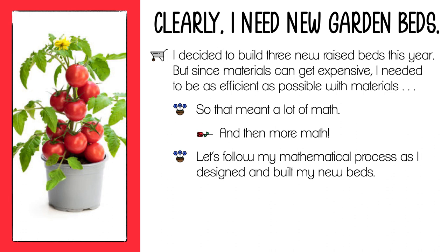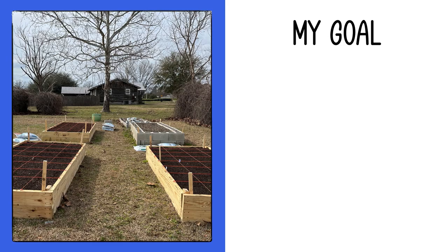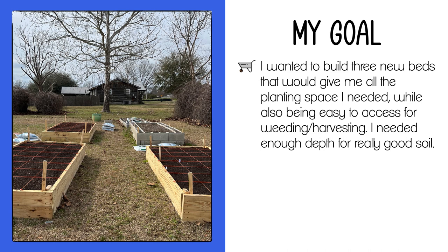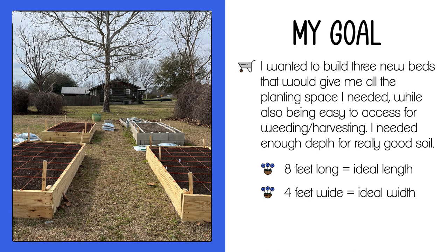If you have some scratch paper and something to write with, get that out now so you can do these math problems along with the video and get some good practice. So here was my goal — and in the picture you can see the outcome: I did get my three new beds. I wanted to build three new beds that would give me all the planting space I needed while being easy to access for weeding and harvesting, with enough depth for really good soil. So I needed these beds to be eight feet long, four feet wide, and one foot deep.